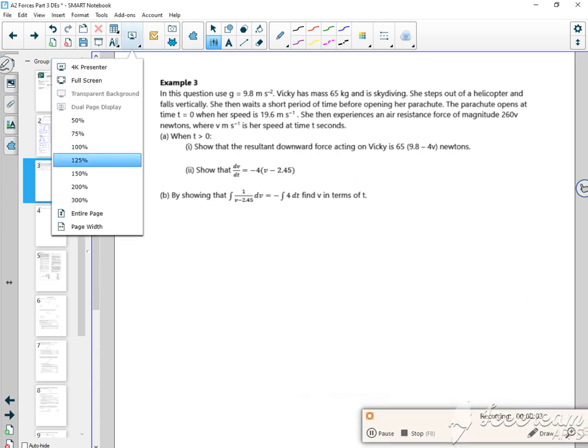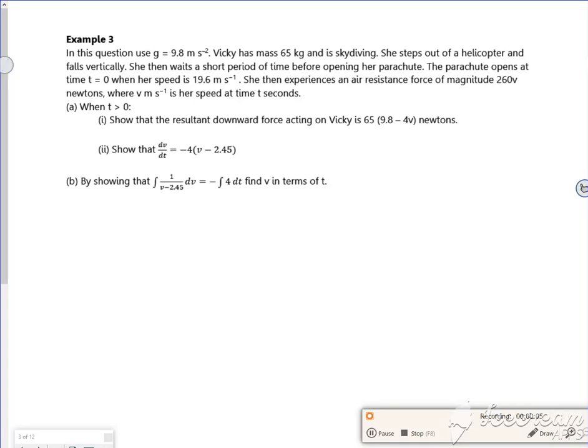Hi, right then, so we've got this third example. This one's been quite straightforward, so let's see what this one's like. So it says, in this question, you use G's 9.8.